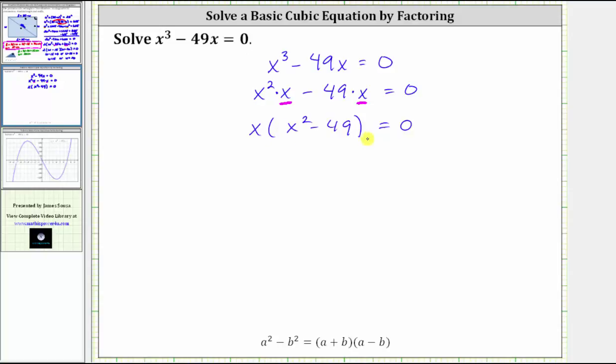So again, if it's helpful, we could rewrite this as x times the quantity x squared minus seven squared equals zero. And for review, here's the formula for factoring a difference of squares.